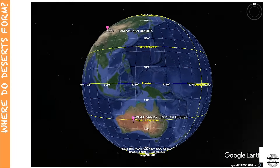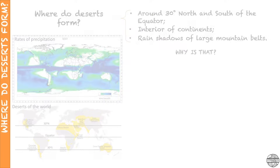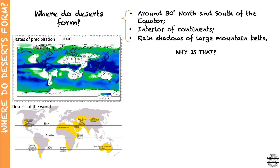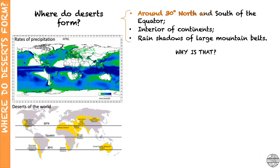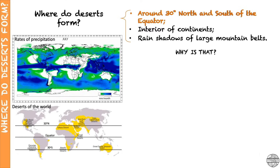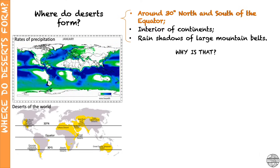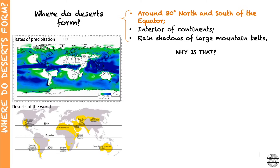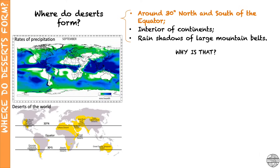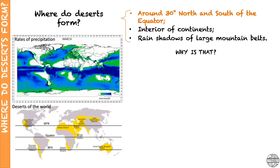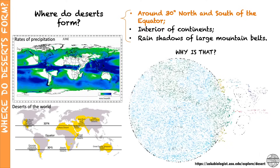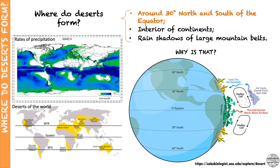But why did these deserts form in those locations? Let's go over what is happening in each of these geographic locations. Let's start with the latitudinal position where a lot of deserts form — between 15 and 30 degrees north and south of the equator. Major deserts form there because of the characteristics of the atmospheric circulation in our planet.